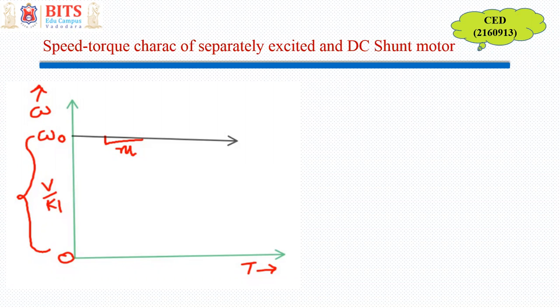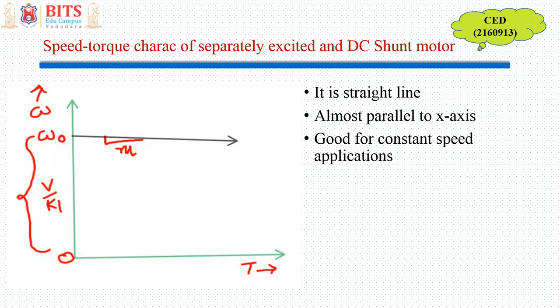Both are having similar characteristics - a straight line which is almost parallel to the x-axis or torque axis. So this is the characteristic which is good for constant speed applications.